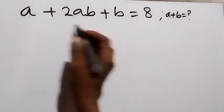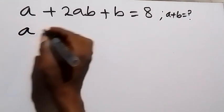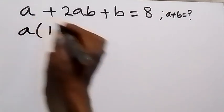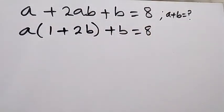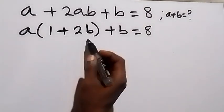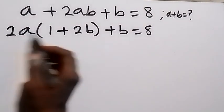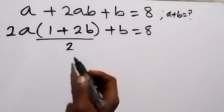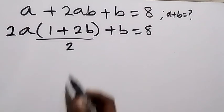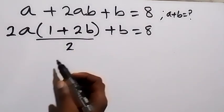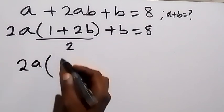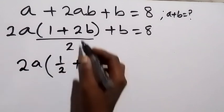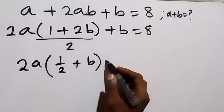From here, let's factor a out in these two terms, so we have a into bracket: 1 left here, then plus 2b, then we have plus b, which equals 8. From here, we can multiply and divide by 2 — it's the same thing — we cancel 2, then use this 2 to divide what is in the bracket. This becomes 2a into bracket.